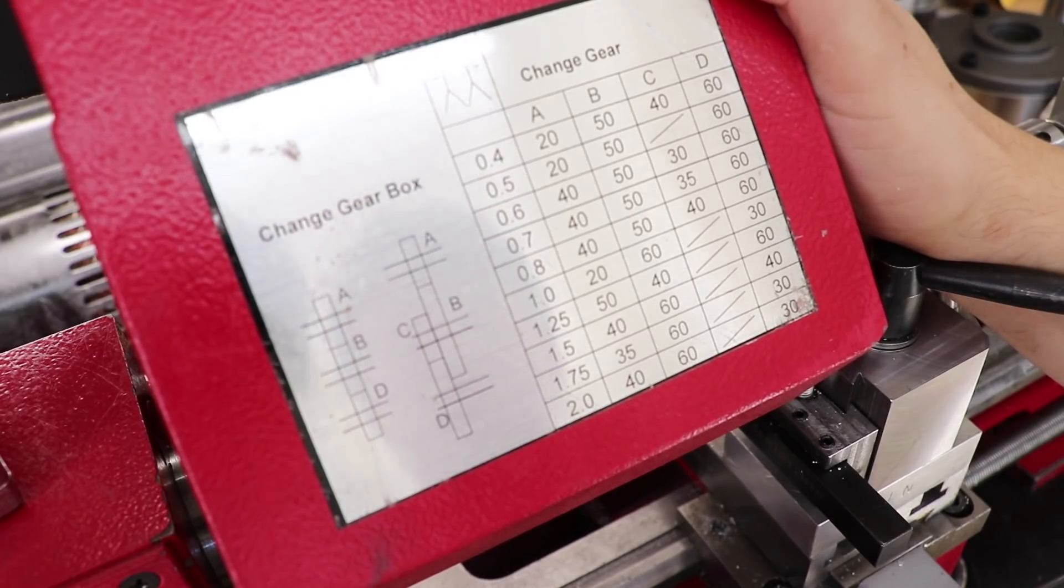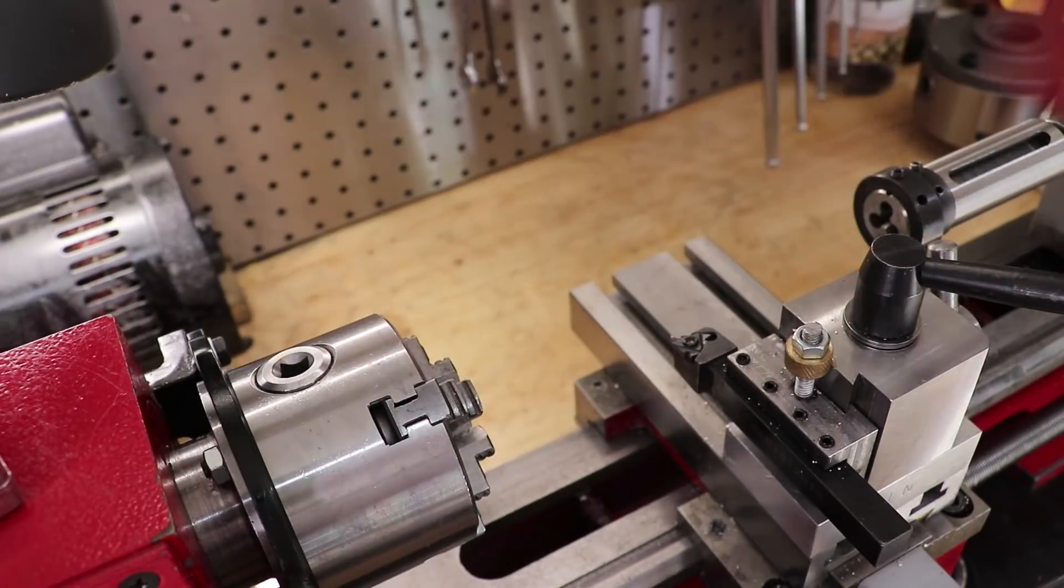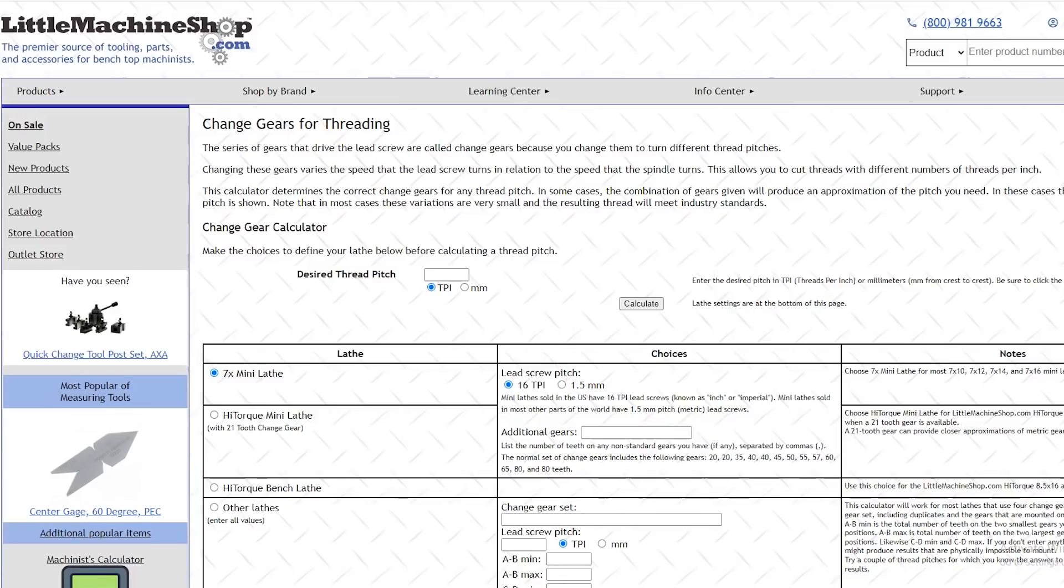I know that on bigger lathes, that is a feature that's standard, but here, not so much. Now if you really want to, you can calculate the gear ratio by hand using a calculator, but thankfully Little Machine Shop has done the hard part for us.